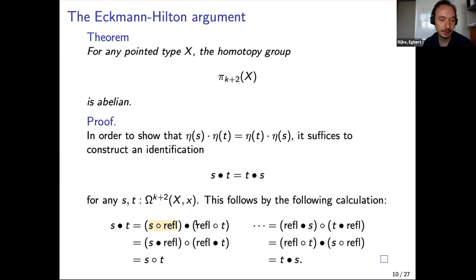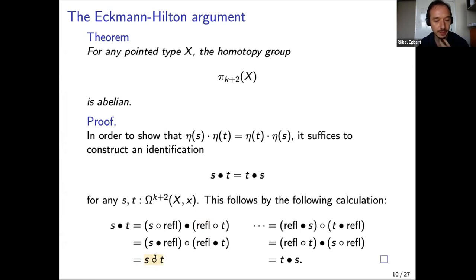This brings us into a situation where we apply the interchange law: s stays, the refl moves to the other side, and t stays in place — the composition has changed. We get s composed with t via the new operation. Continuing the calculation, we use unit laws for ordinary concatenation in the other direction, putting refl on either side. We apply interchange again: t and s are now swapped in places. We apply unit laws and finish the proof.